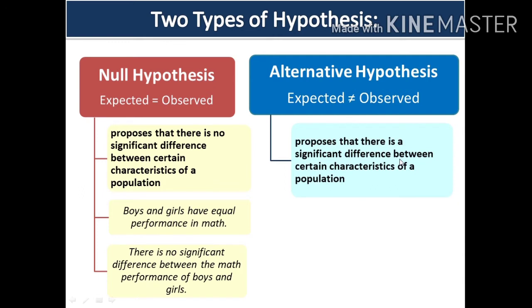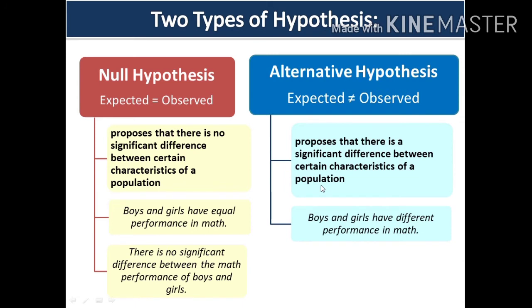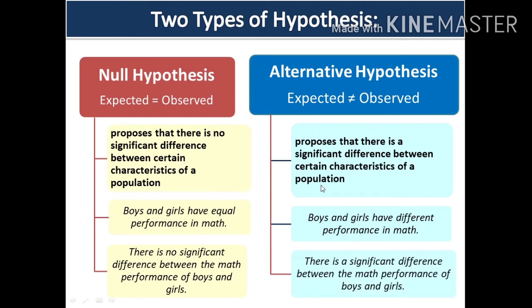The alternative hypothesis proposes that there is a significant difference between certain characteristics of a population. In this case, the mathematics performance of boys and girls are being compared, and in the alternative hypothesis they are different. So we can say boys and girls have different math performance, or there is a significant difference between the math performance of boys and girls. It could either be boys have better performance in math or girls have better performance in math.